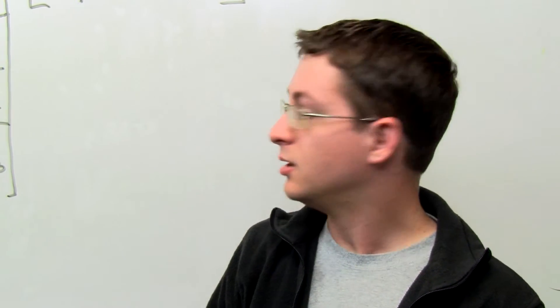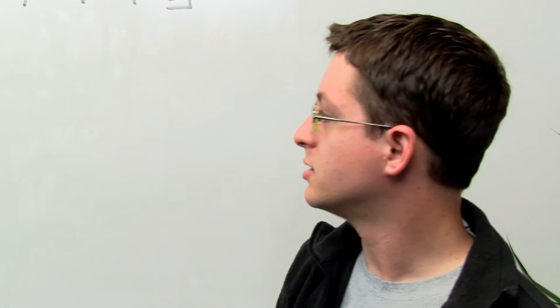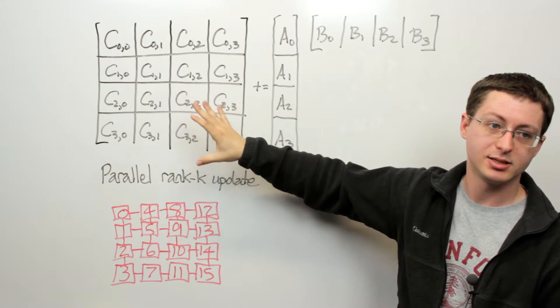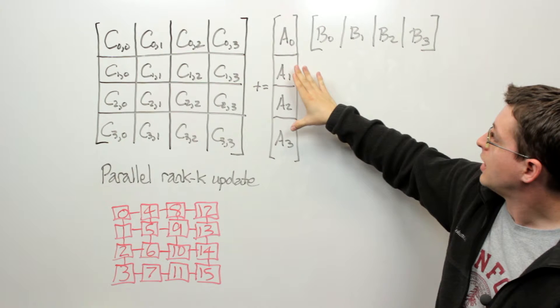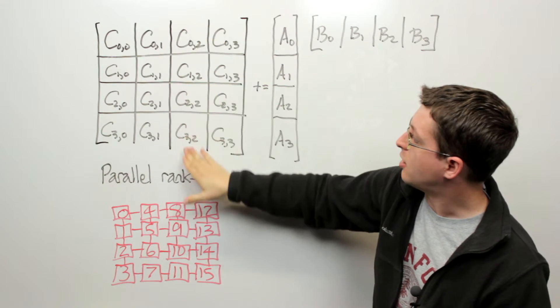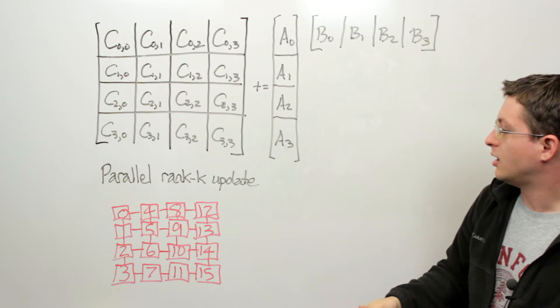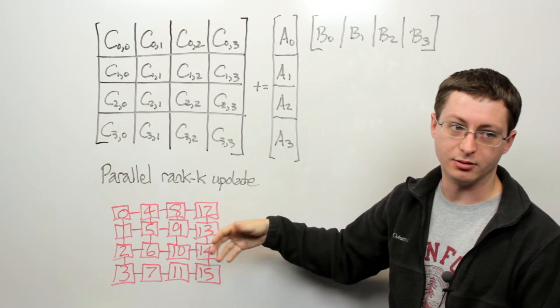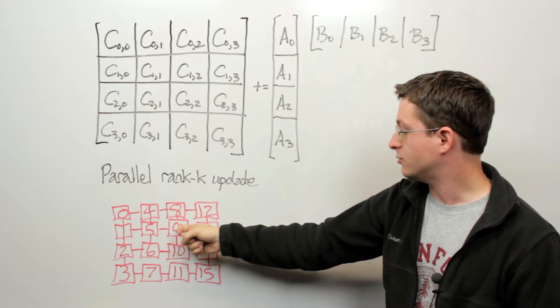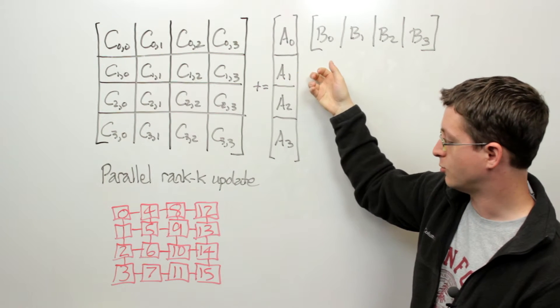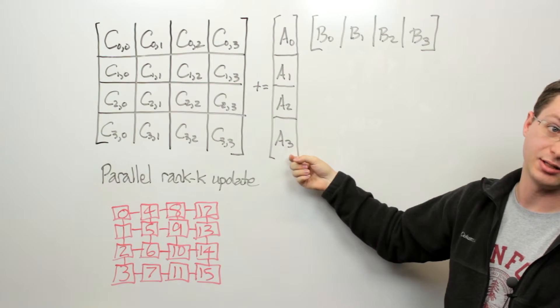But now suppose that A and B are just portions of a larger distributed matrix. It was actually distributed in the same manner to C. So suppose that originally A was distributed just like this column of C. So actually rather than having processes 0, 4, 8, and 12 originally owned A sub 0, originally only process 8 owned it. And likewise originally only process 9 owned A sub 1 and process 11 was the only process that originally owned A sub 3.